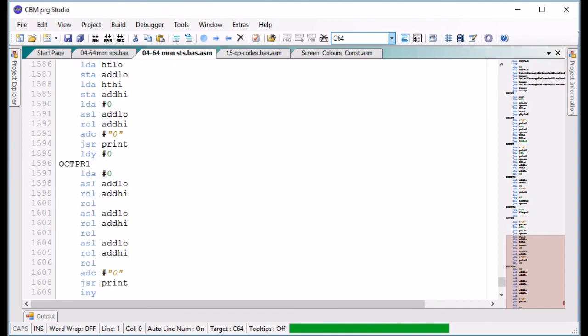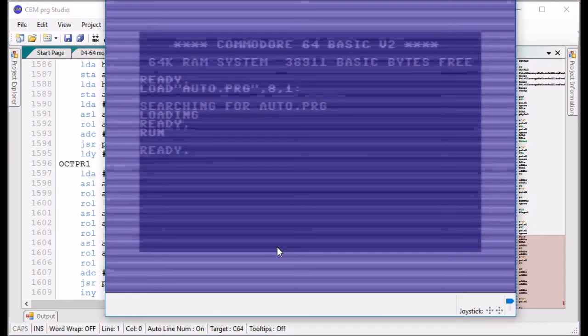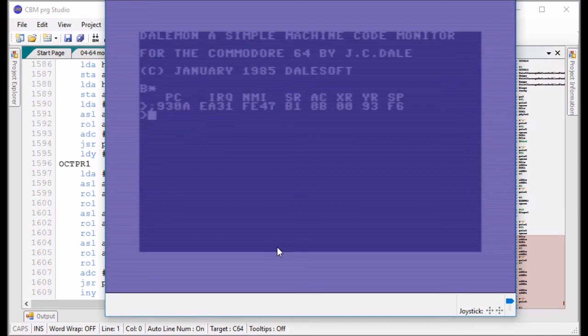And in there there are some conversion utilities. So let's fire it up, SYS 49299. There we go, so this is my machine code monitor that I wrote when I was in 1985, so that would have made me 19, 18, yeah somewhere around there.